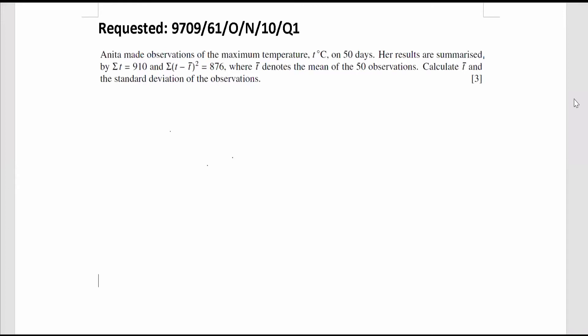Hi, this is the requested video of questions from 2010 October-November, Bearing 61, Question 1. Anita made observations of the maximum temperature, which is given by small letter T, on 50 days.